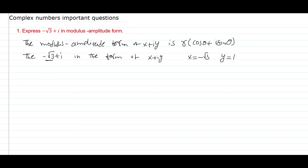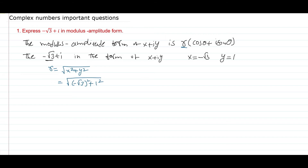r is equal to root of x squared plus y squared. So r equals root of minus root 3 squared plus 1 squared, which is root of 3 plus 1, equal to root 4, so r equals 2.